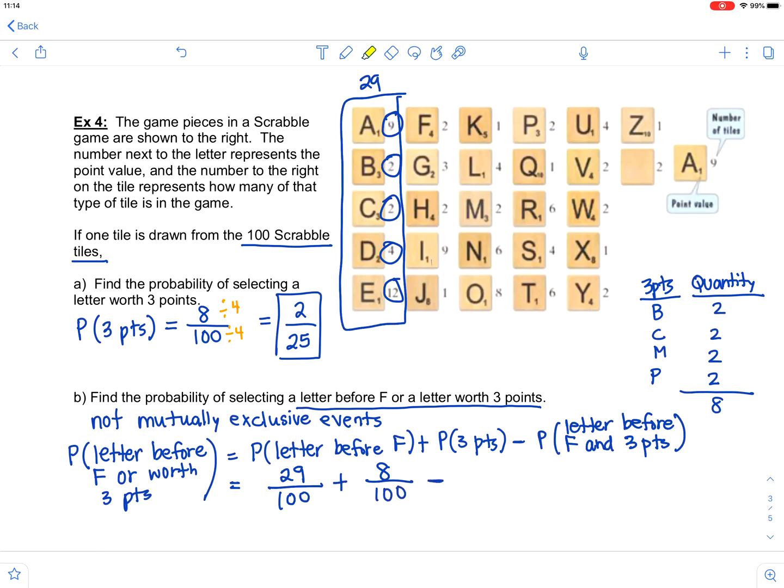Now I need to find the letters that are before F and worth three points. So take a moment and think about what letters you think those are going to be. Before F and worth three points. The B would satisfy that as well as the C. Those are letters that are before F and also worth three points. So there are four of those tiles, the two plus two. So I'm doing the subtraction here on the right, minus four out of 100.